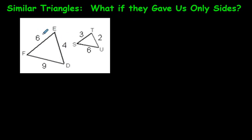The shortest side of this one is 4. The shortest side of this one is 2, and the middle length one is 6, and the middle one here is 3, and then the last one will be 9 and 6. So let's see if these triangles are similar.